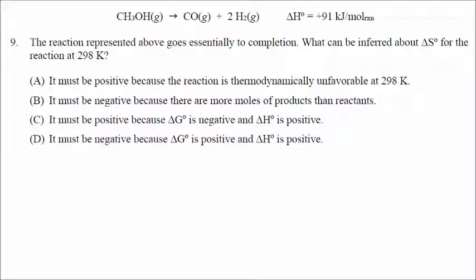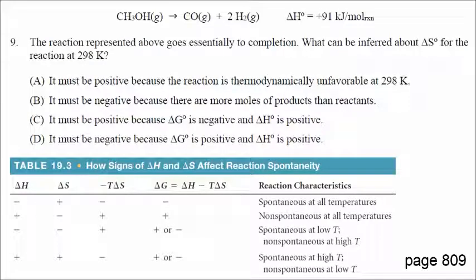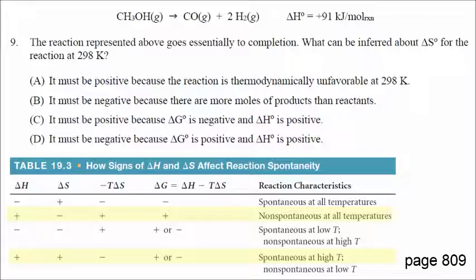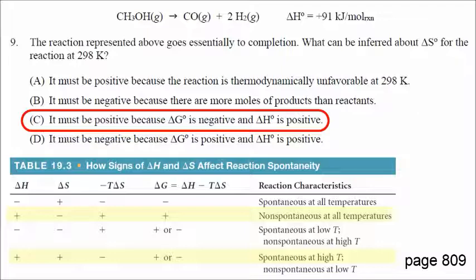Number nine: the reaction goes essentially to completion, so it is favorable and delta G should be negative. The delta H is positive — an endothermic reaction. If delta S were negative, the reaction would not be favored at all. Because this reaction does go to completion, delta G is negative at 298 Kelvin. With a positive delta H, delta S must be positive — that's how we get a negative delta G. Correct answer is C.